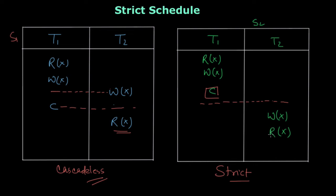Now a question arises: somebody might think that a strict schedule is a serial schedule, because I'm not starting any operation from T2 before T1 commits. A strict schedule is a serial schedule only if we are working over a single data item X. In that case, yes, it will be a serial schedule because until the first transaction is committed, the next one will not start.